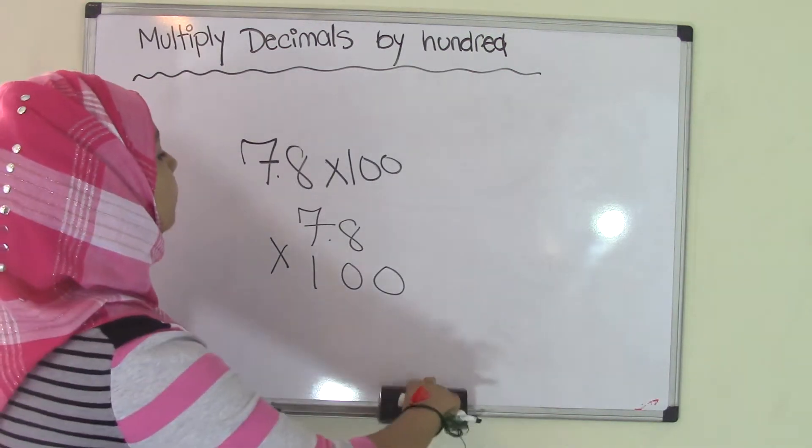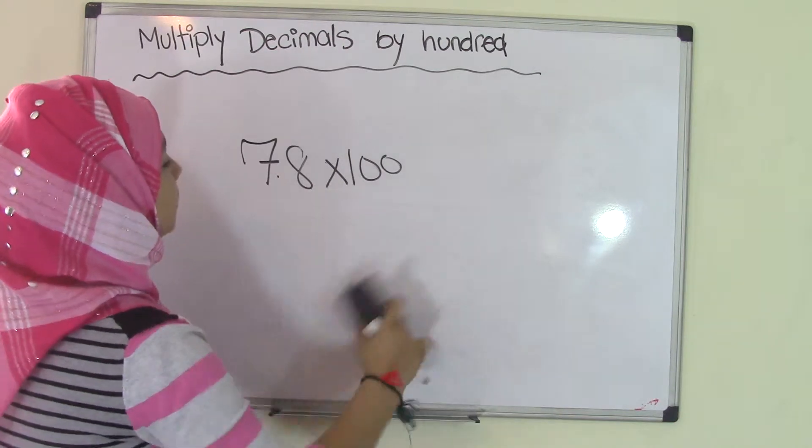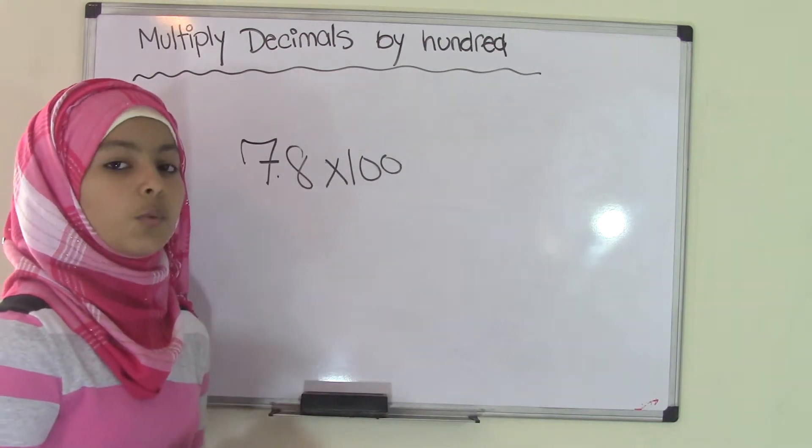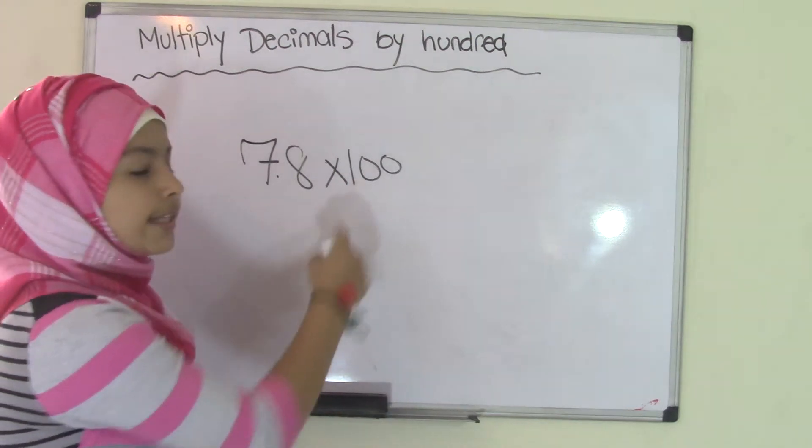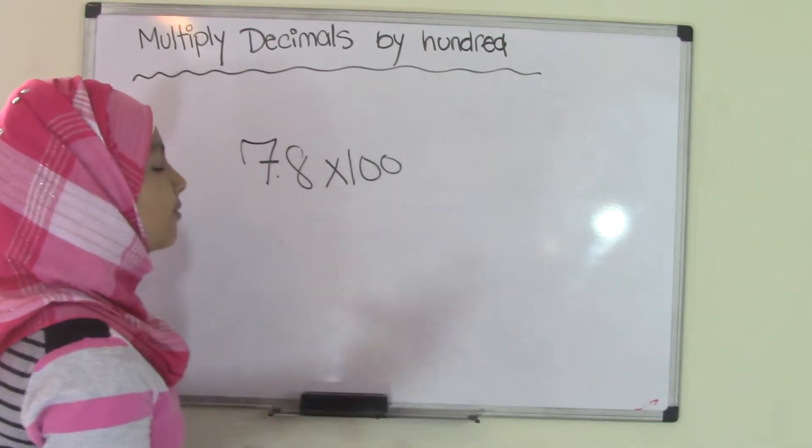So you have 7.8 times 100. You will count the number of zeros in the 100. Now we all know that 100 has how many zeros? 2 zeros, right?